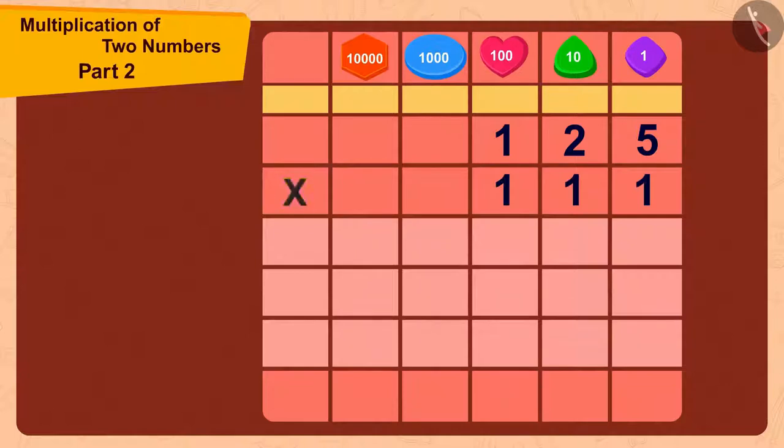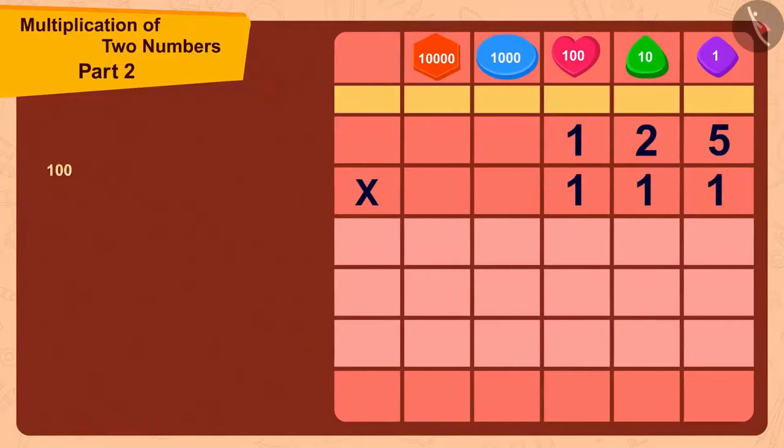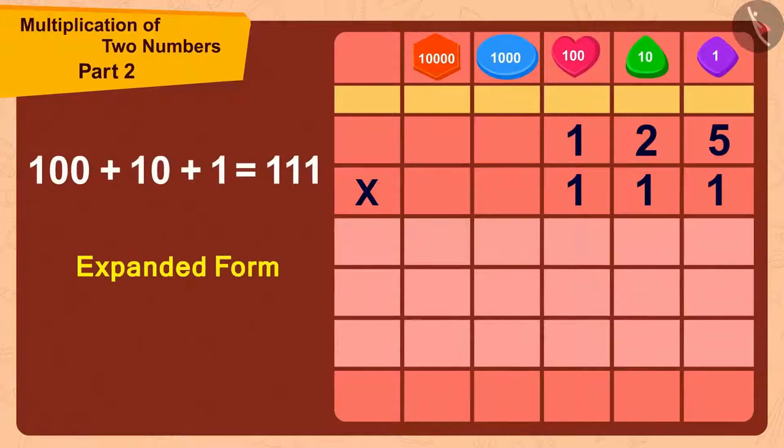So in how many steps can we do this? That's right, three steps. We can write 111 in the expanded form by adding 1 and 10 to 100.